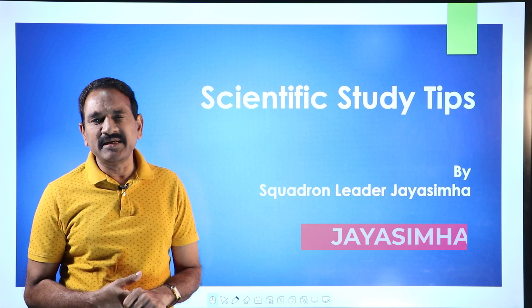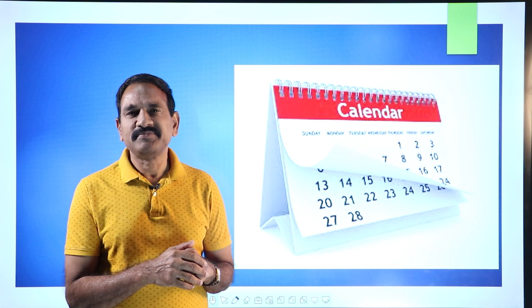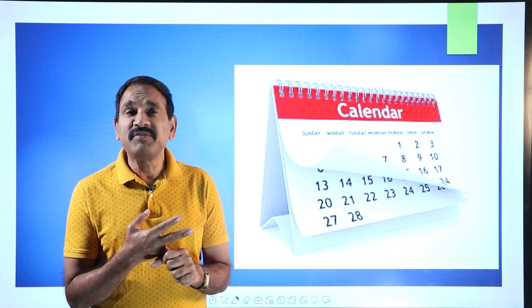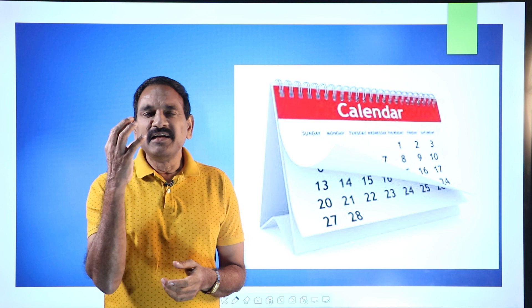We are going to learn something very interesting today: how to memorize a calendar. What does that mean? If someone gives you any random date, which day is it — Sunday, Monday, Tuesday, Wednesday, Thursday, Friday, Saturday? You might say, 'We have a calendar. You can check Google or your mobile phone.' But can you do it simply from your brain? That's what this is all about.